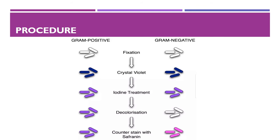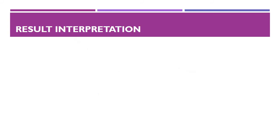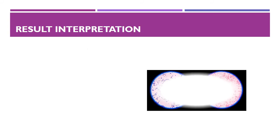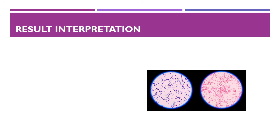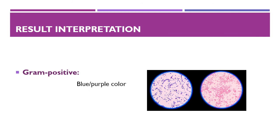Air dry, blot dry, and observe under the microscope. Result interpretation: under the microscope, some bacteria appear blue in color and some appear red in color. Blue-color bacteria are called gram-positive bacteria, and red-color bacteria are called gram-negative bacteria.